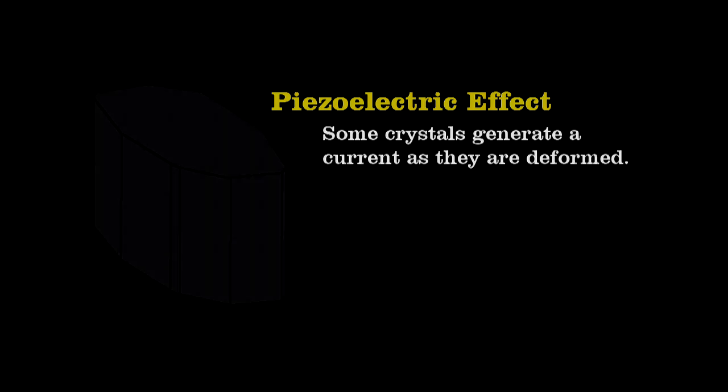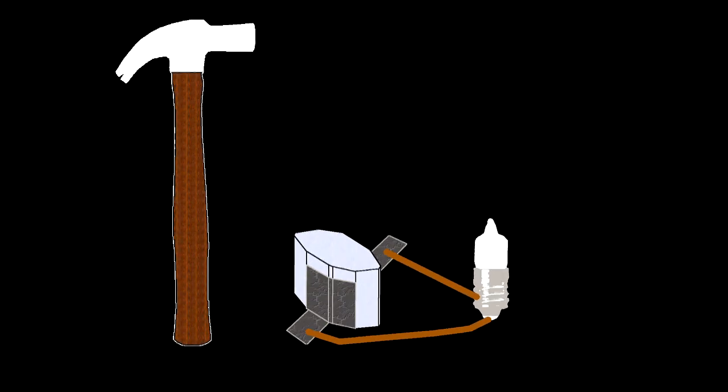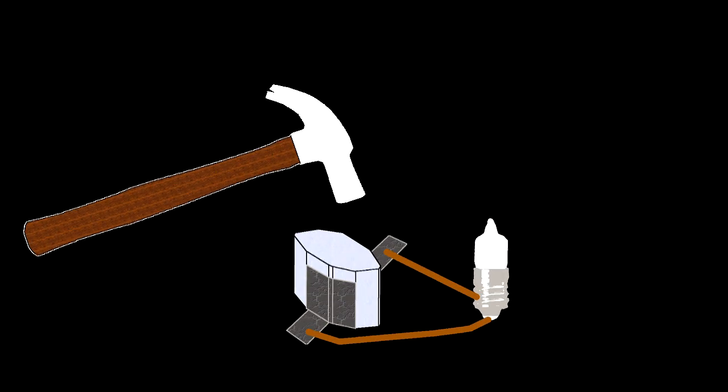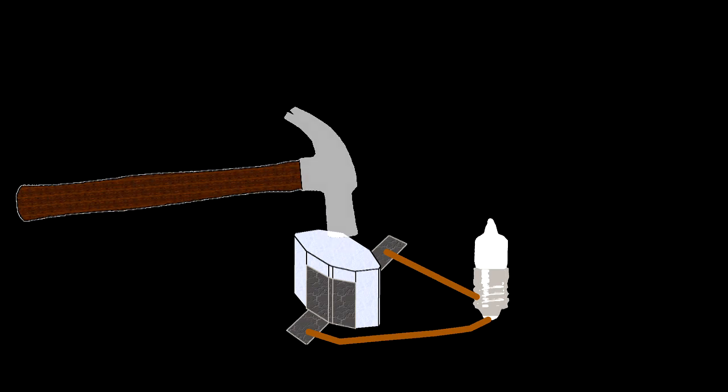You can see this piezoelectric effect most easily with Rochelle Salt. Here at the center lies the crystal. I've attached two electrodes made of tinfoil and strung wire from them to a small bulb. Watch what happens as I strike the crystal with a hammer. As I deform the crystal, it generates a current.